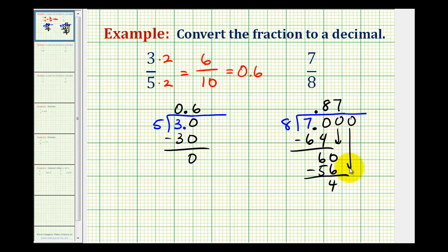Add another zero and bring it down. Now we have 40. And this is good news, because there are actually 5 eighths in 40. So we put a 5 here. 5 times 8 is 40. And now when we subtract, we have a zero. This means the decimal terminates. So 7/8 is equal to 0.875.